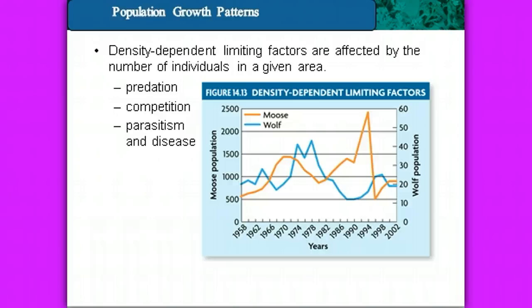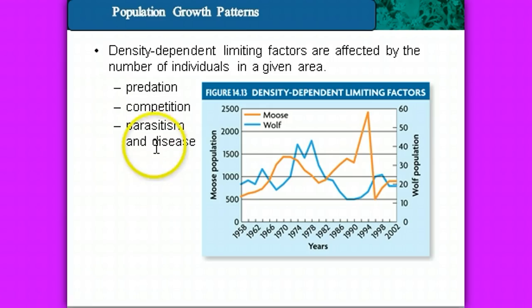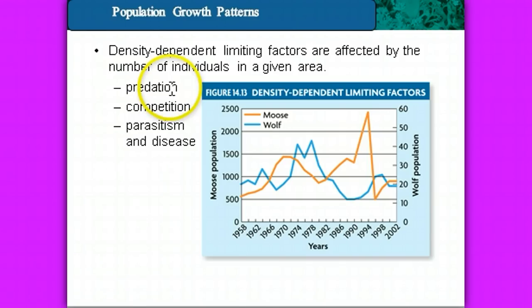If you have a large number of organisms living in a very close area, they are more likely to spread parasites and disease. If there are too many organisms in a particular environment, they might compete with each other for available resources — whether it's shelter, food, or water. Predation is also another density-dependent limiting factor.